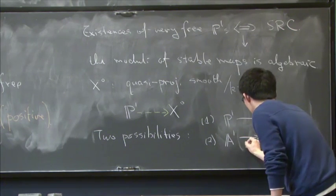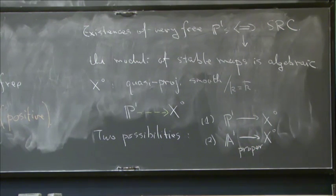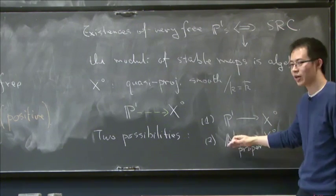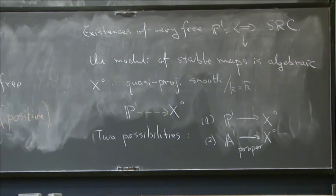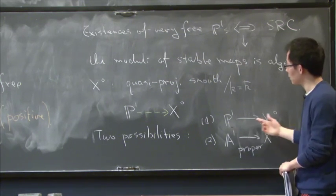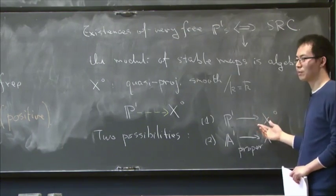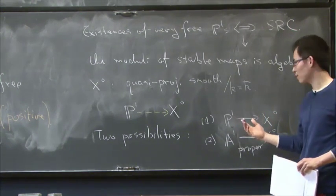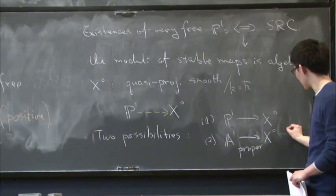And first of all, I want this morphism to be proper. So the properness just means that there's no way you can extend your map further to get a P1 inside X0. And in many situations, if you want to study the deformation of maps, P1 maps to X0 that behaves like P1 maps to a projective variety.